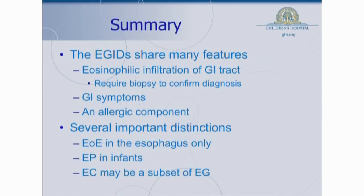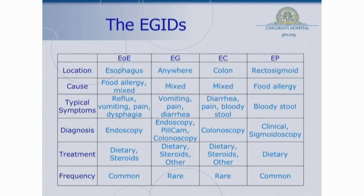In summary, the EGIDs share many features, including the important one of eosinophilic infiltration of the GI tract. You need a biopsy to confirm the diagnosis in any of them. They all have some form of GI symptom associated with them, and they all tend to have at least some allergic component, some more than others. There are also several important distinctions: EE occurring only in the esophagus, EC occurring as a subset of EG, and eosinophilic proctitis occurring in infants and usually being food allergy related. The last slide is a table summarizing the similarities and differences between all these disorders.